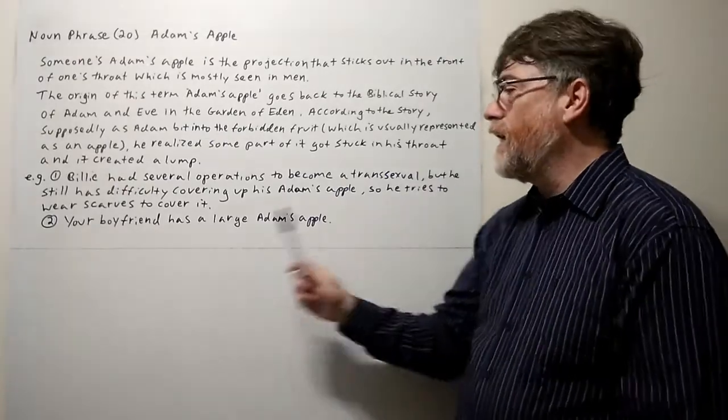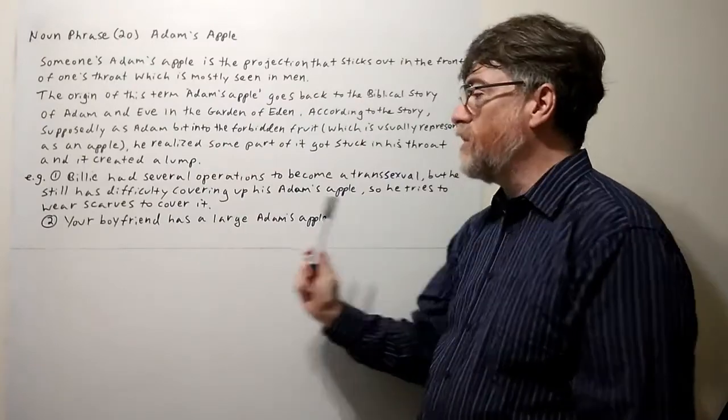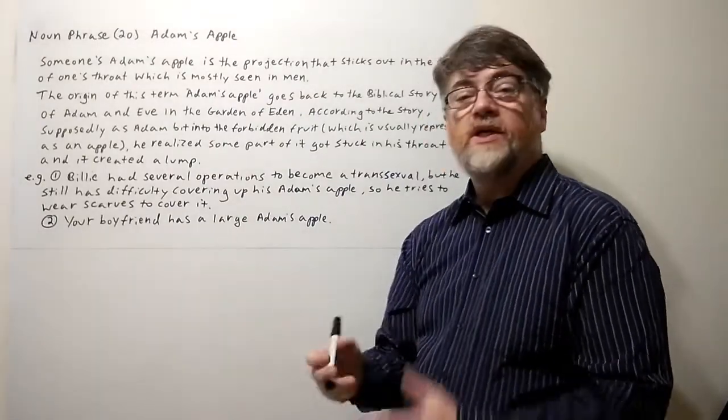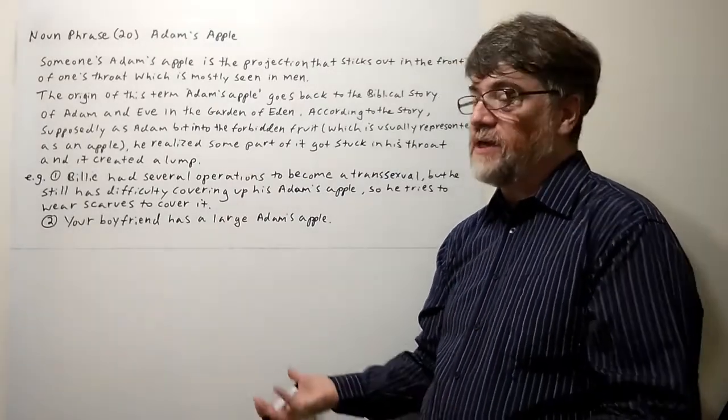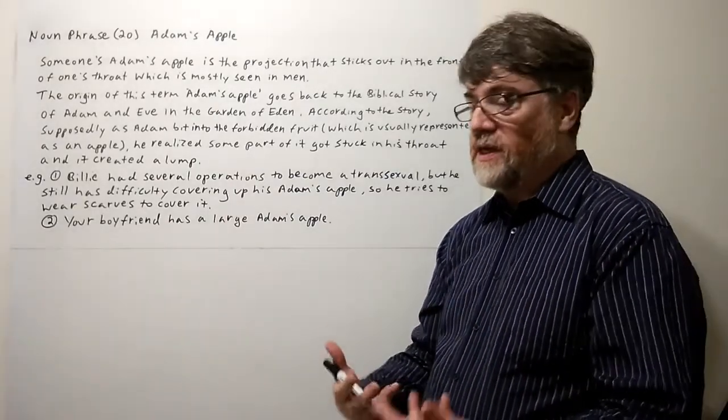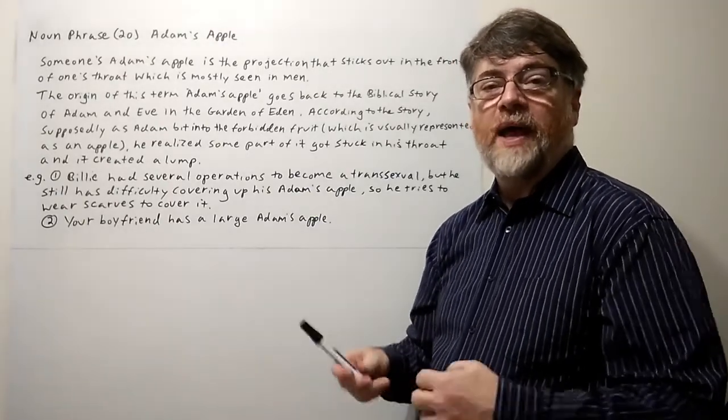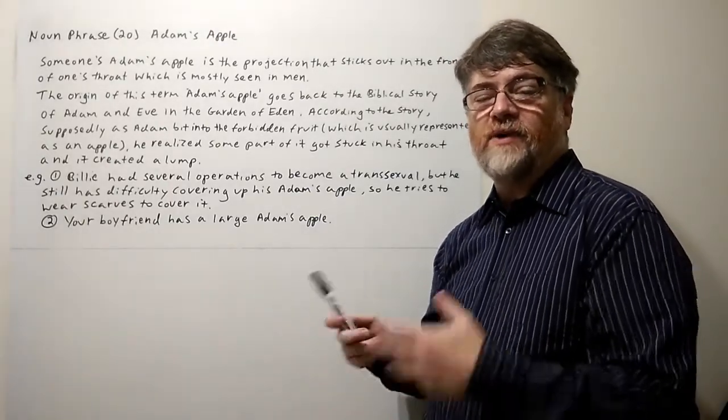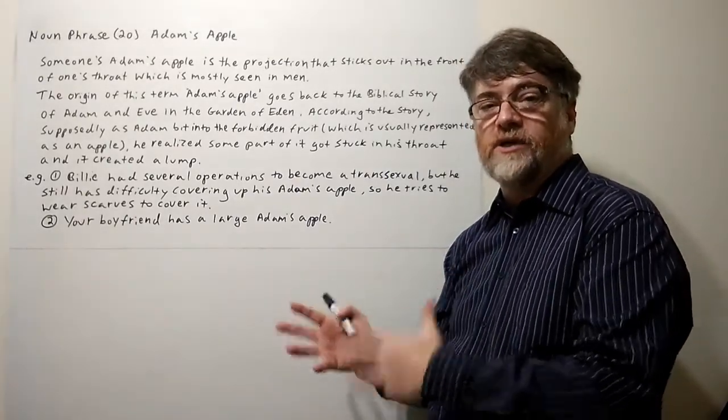So he's probably born a man and wants to become a woman. But he still had difficulty covering up his Adam's apple, so he tries to wear scarves to cover it. Maybe he did have some operations—maybe he got breasts or removed his lower sexual organs—but even though he did all that, there's still an Adam's apple that's kind of noticeable.